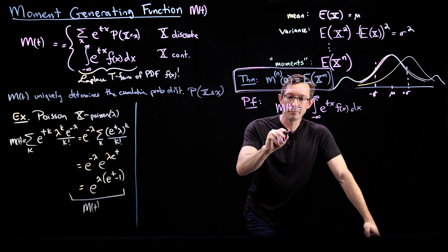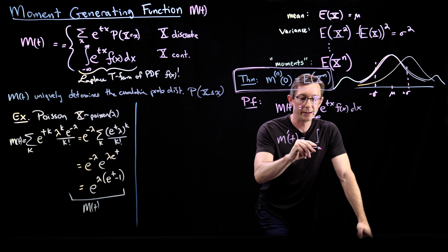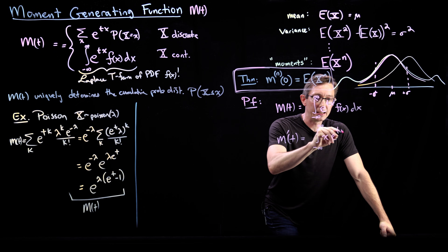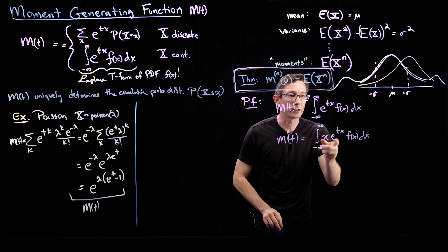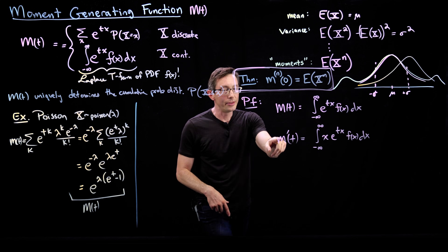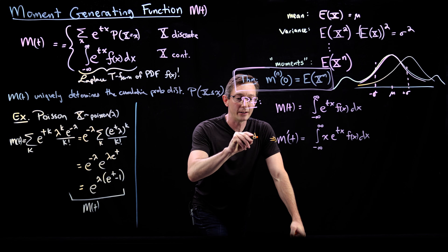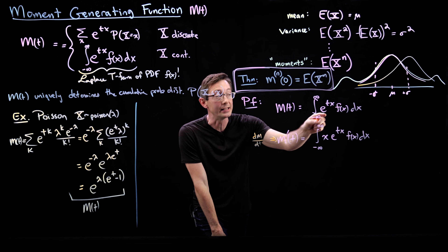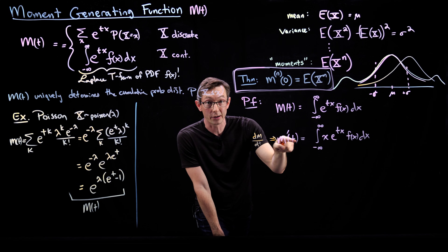And we're going to write down the derivative, m prime of t. This is equal to the integral from negative infinity to infinity of x, e to the tx, f of x dx. How did I write this down so quickly? There's no chain rule, no integration by parts. This m prime is the derivative of m with respect to t, not with respect to x. The only thing that depends on t is e to the tx, and the derivative of e to the tx is x e to the tx. So it's super easy to compute.